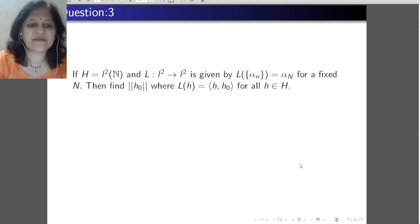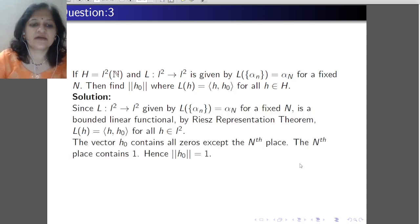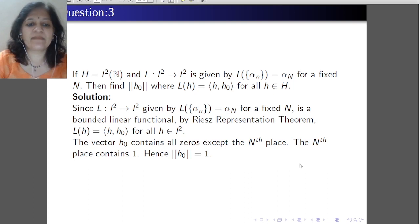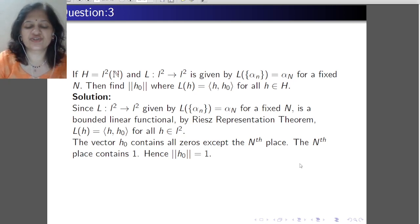Next question: if the Hilbert space H is l2(N), and the functional L is defined by L of the sequence (αn) is αN for a fixed integer N, then we want to find the norm of a fixed vector h0 where Lh equals the inner product of h with h0 for all h. Since L from l2 to ℂ given by L(αn) = αN is a bounded linear functional, by the Riesz representation theorem it is of the form inner product of h with h0. By observation, h0 contains all zeros except at the Nth place, which contains 1. Hence the norm of h0 equals 1.